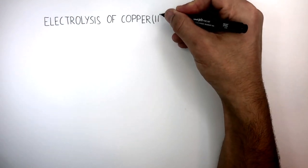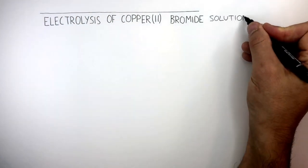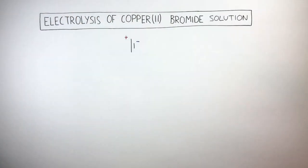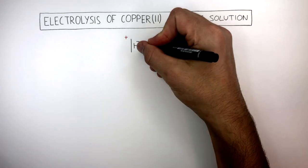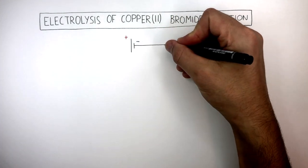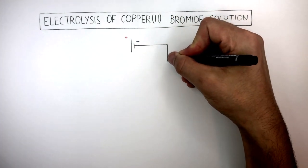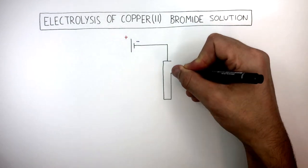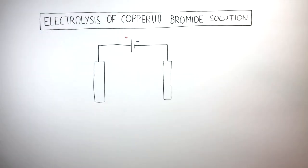Electrolysis of copper bromide solution is carried out using a cell or power pack where the positive terminal is on the left and the negative terminal is on the right. A wire is connected from the negative terminal to the negative electrode, and the positive electrode is connected to a wire which is then connected to the positive terminal of the cell or power pack.